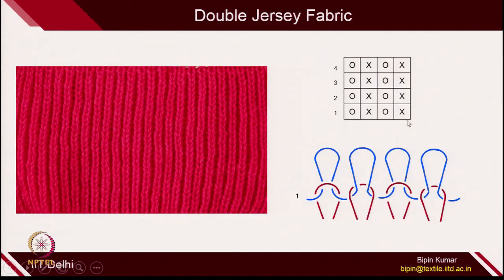Not only the analysis of fabric, but you will also learn how it is different from a single jersey fabric. This fabric is actually having the symbol of 0 cross 0 cross. Basically, along a course, this fabric has technical back and front loops alternately. So in the first column the technical back, then next column technical front, then back front. Along the course, loops are changing from technical back to front alternately. In this particular lecture, we are going to analyze only this particular fabric.